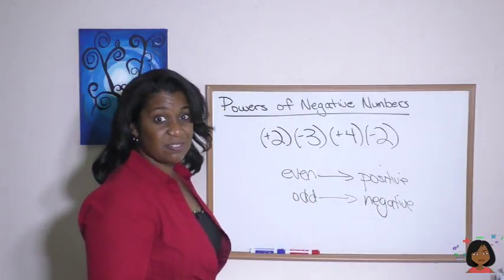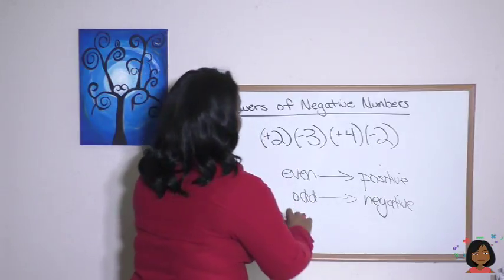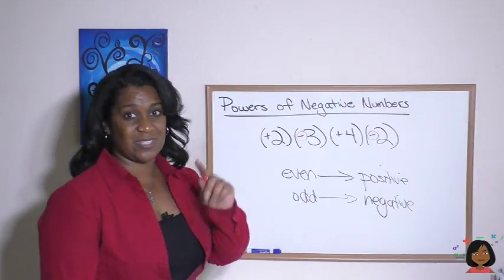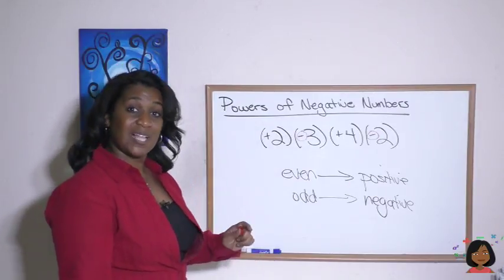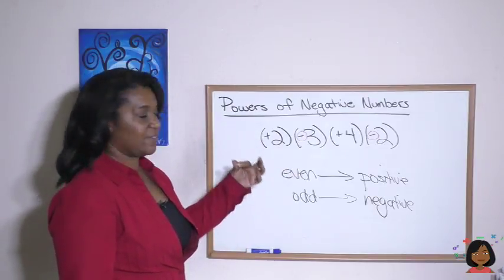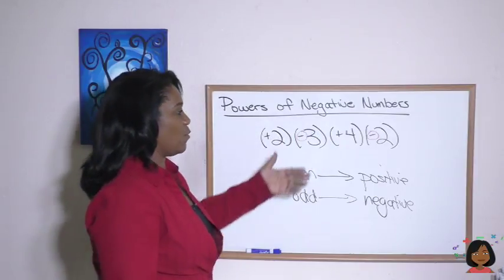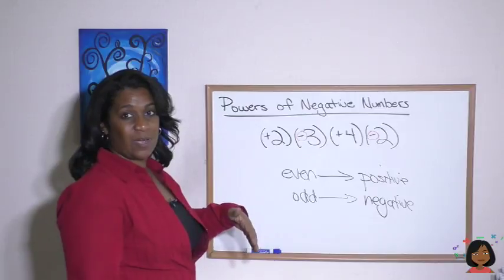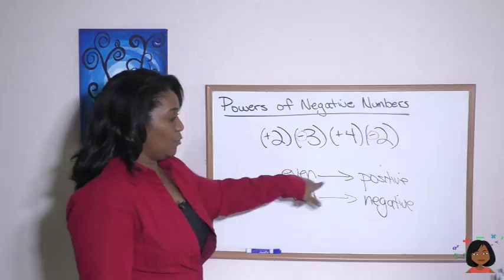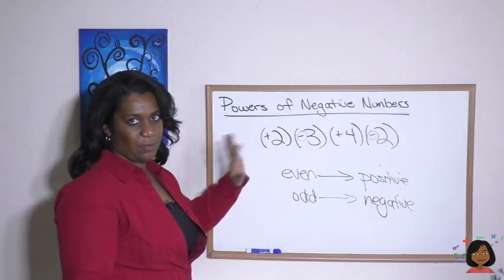Let's apply that to this problem and check it. How many negatives do we have? We've got one here and one here, so that's two — an even number — so our answer is going to be positive. Let's check: 2 times negative 3 is negative 6; negative 6 times positive 4 is negative 24; negative 24 times negative 2 is positive 48. Our answer is positive!